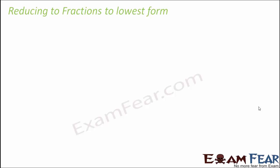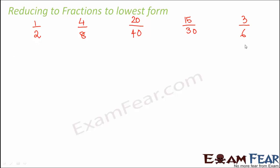Now we will learn about reducing fractions to lowest form. Equivalent fractions and lowest form fractions are connected. For example, 1/2, 4/8, 20/40, 15/30, and 3/6 are all equivalent fractions representing the same number. Only 1/2 is already in its lowest form; all others can be reduced.